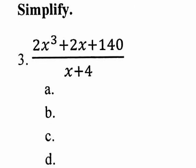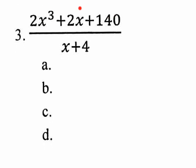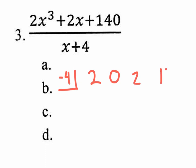Number three: synthetic division is the way to handle this problem. It's asking you to divide this cubic polynomial — actually a cubic trinomial — by this linear binomial. Put the opposite of the number with the X, which is negative four. Write down all the coefficients in order, including zeros for missing powers. The coefficient of the first term is two, there's no X squared so write a zero, then the coefficient of two on the X, and the constant 140 at the end. Draw your line.